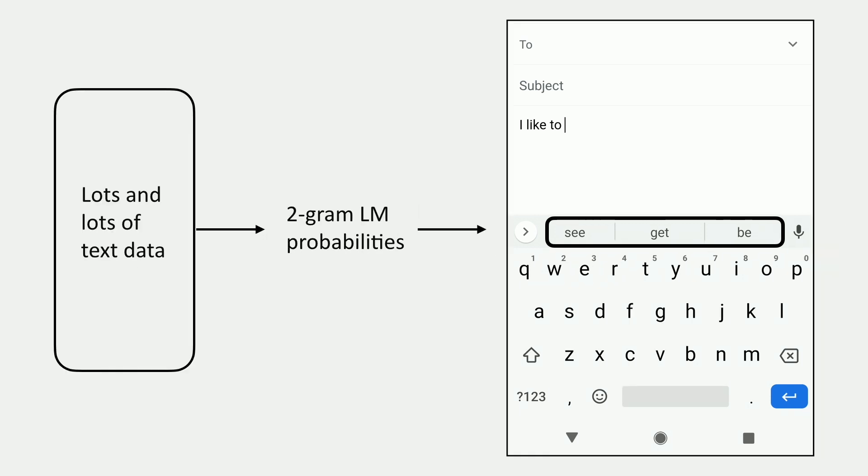So essentially our process here is we have a lot of text that we've seen. Maybe on your phone you can imagine your phone knows about a lot of stuff that other people have typed, but then also everything you've ever typed on it, right? And it's going to estimate a set of 2-gram language model probabilities, which are then going to allow us to do this kind of prediction. So this step of getting those probabilities is what we need to talk about.